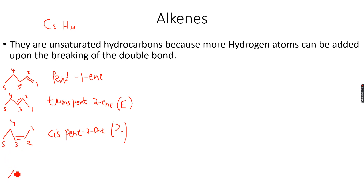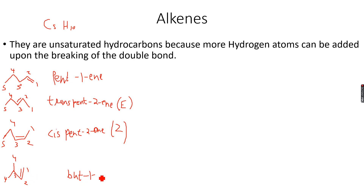We can also have some branched alkenes. In this example, the longest chain has four carbon atoms, so this will be 'but-'. There is a carbon-carbon double bond on the first carbon atom, so 'but-1-ene'. There is also a methyl group on the third carbon atom, so this is 3-methyl-but-1-ene. Again, because we have the carbon-carbon double bond on the terminal carbon atom, there will be no cis-trans or geometric isomerism.